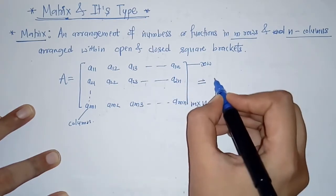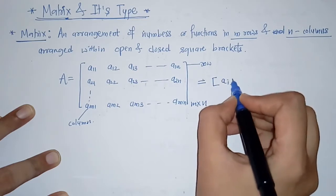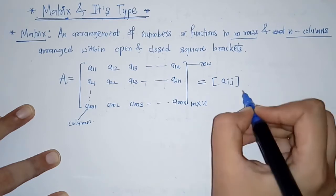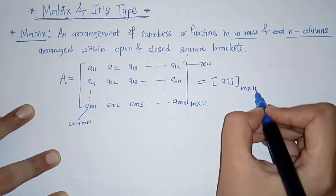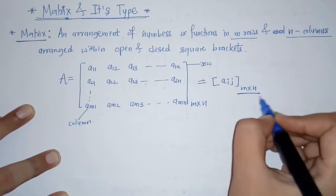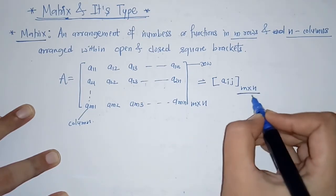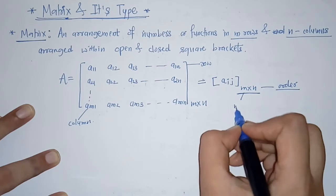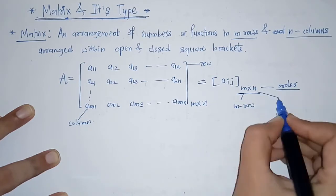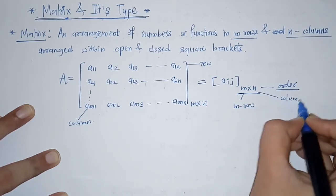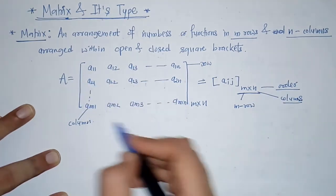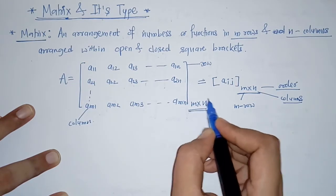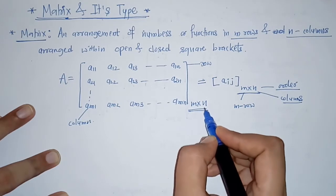These numbers are called the elements of the matrix. In general, we write this matrix as aij enclosed within brackets with elements m into n, and this m into n is called the order of the matrix. That means here we have m rows and n columns, and total elements are also m by n.